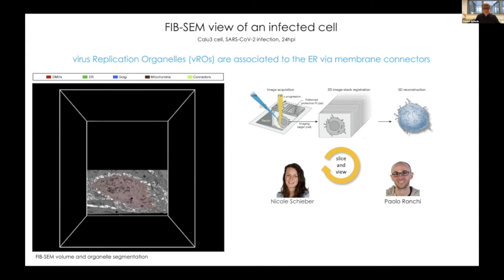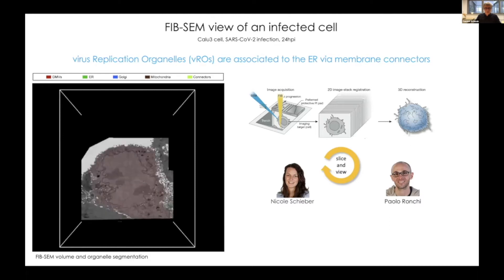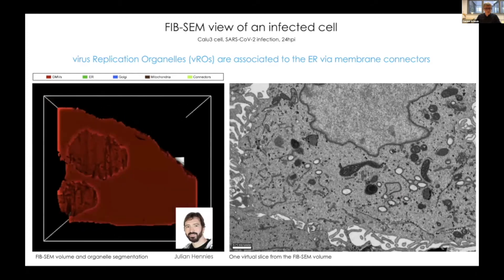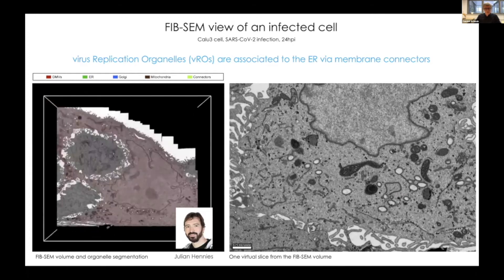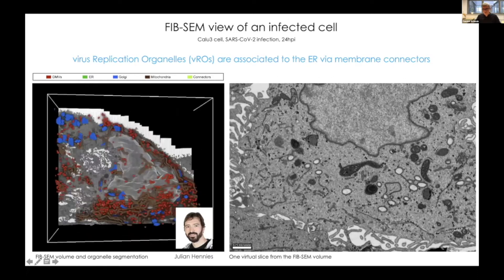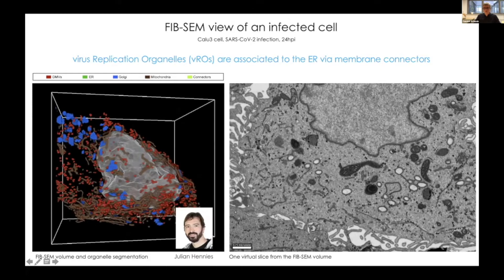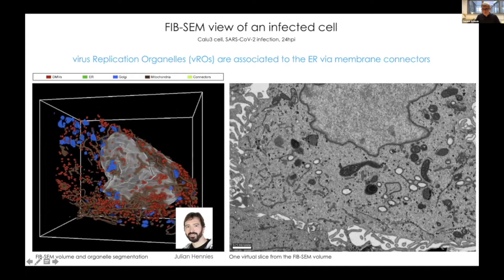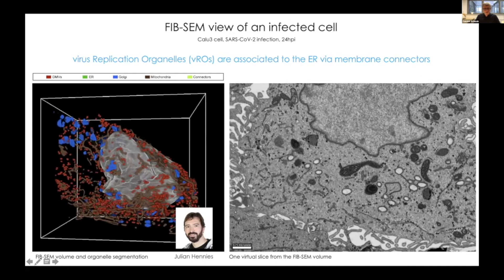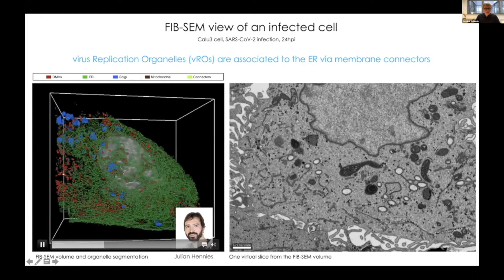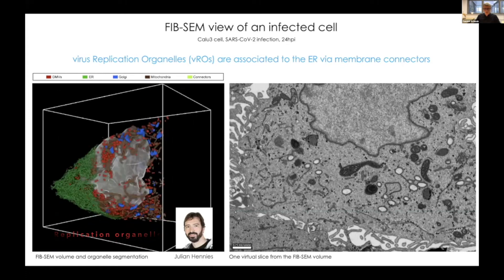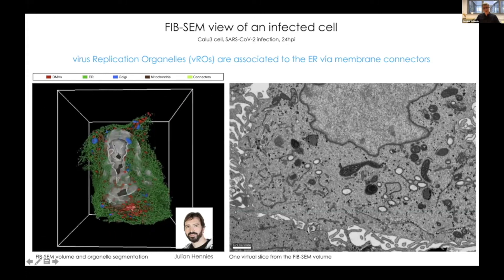By iterating this process of slicing and viewing, you can automatically reconstruct 3D stacks through the cell. The images I'm showing now come from Nicole and Paulo from the lab, and the 3D stacks have been nicely segmented by Julian, a PhD student from my lab. What you see here is a full cell reconstructed in 3D with details such as mitochondria and the endoplasmic reticulum. What stands out very obviously is the accumulation of vesicles throughout the cell — colored in red here, the red balloons — which are the replication organelles.